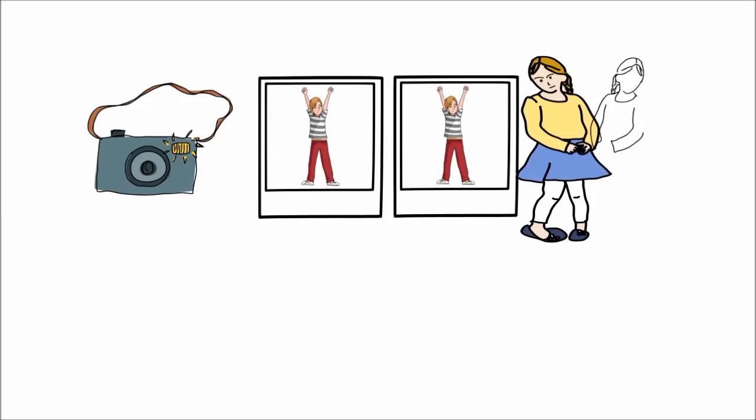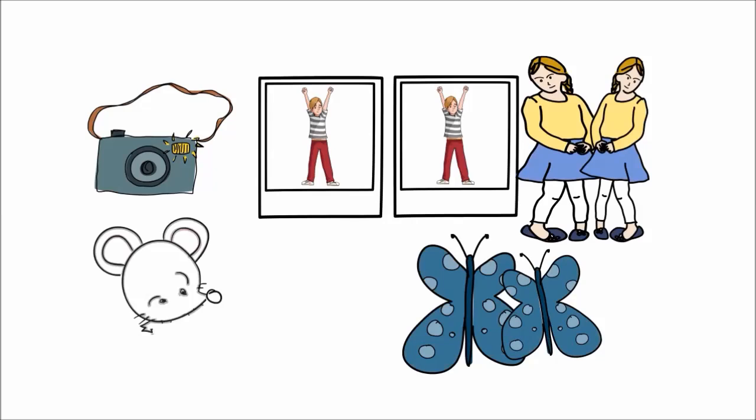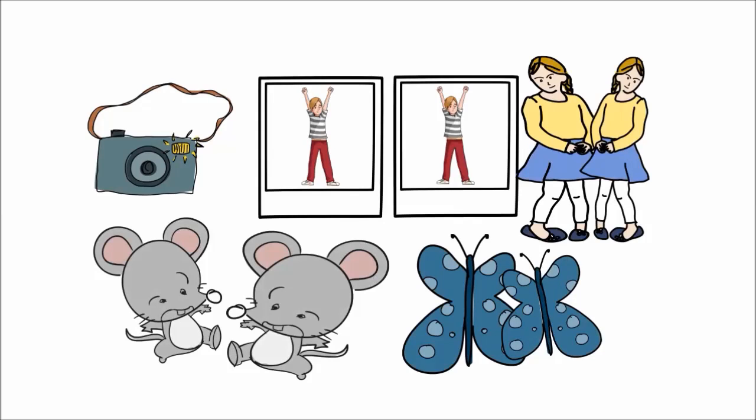Now, evolution has tailored the system so precisely that if two copies of the same DNA blueprint develop, like identical twins, you get basically the same picture.